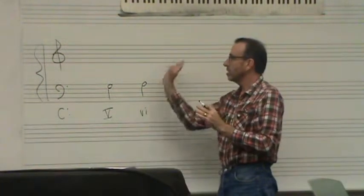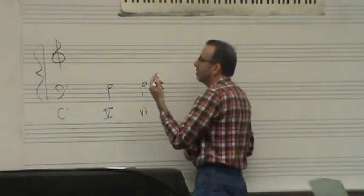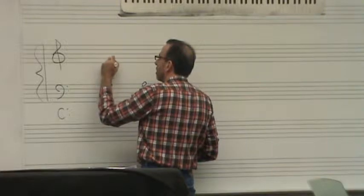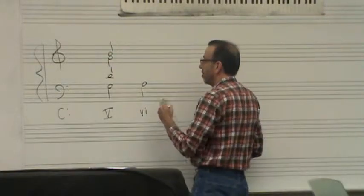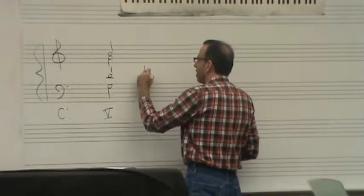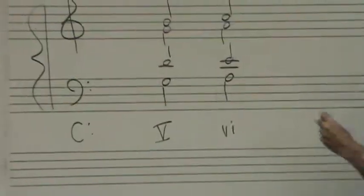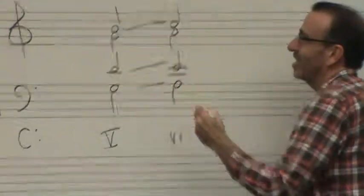So you want contrary motion against the bass going up, the other voices moving down. Because you can imagine, if I just voice this one like this, and say, well, hey, there's my E there, and there's my A there, and there's my C there. Wow, I've got this in octaves.